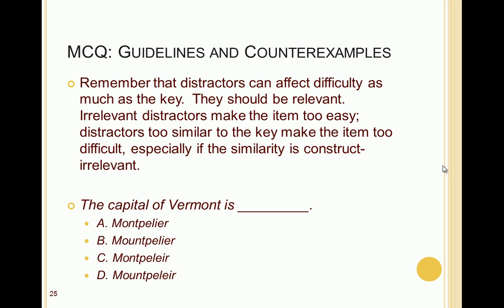Remember that distractors can affect difficulty as much as the key. They should be relevant, because irrelevant distractors make the item too easy — such as including cities not in Europe on a question about Norway's capital. On the other hand, don't make distractors too similar, especially if the similarity is construct irrelevant. For example, listing four different spellings of 'Montpelier' for a Vermont capital question doesn't test geography knowledge — it tests spelling.